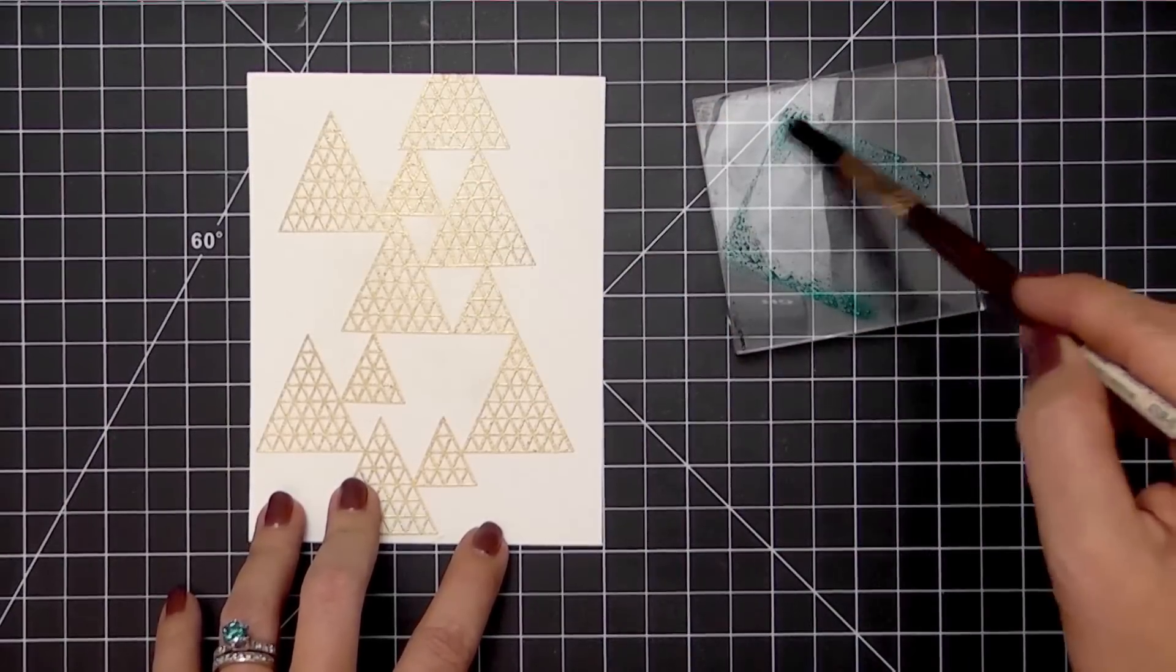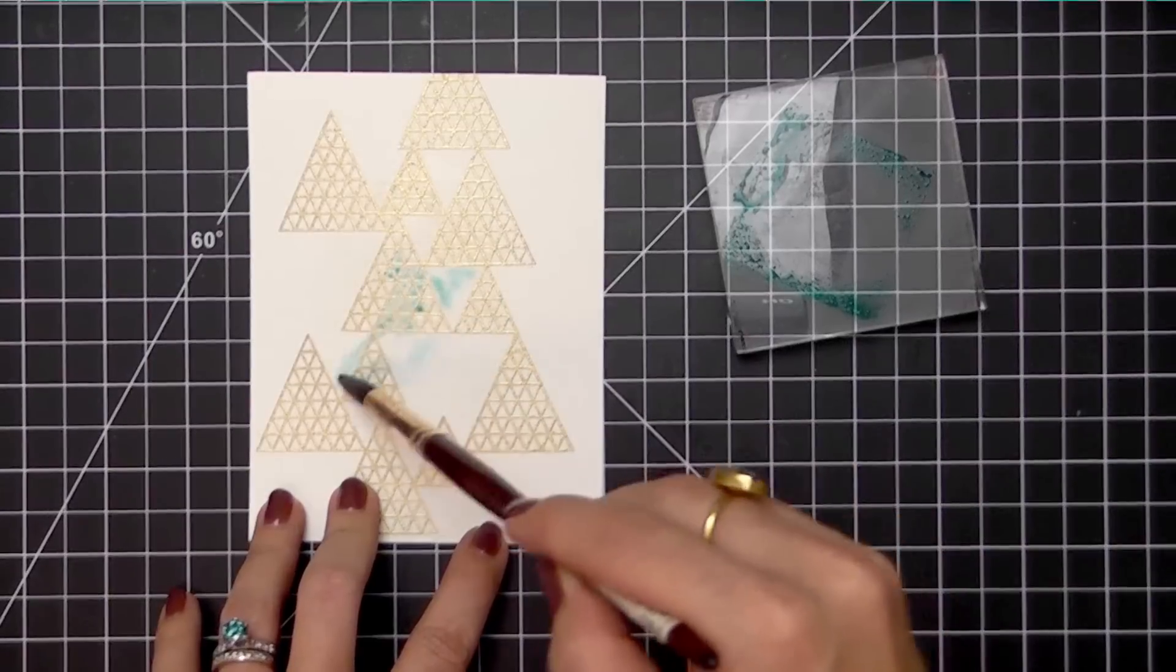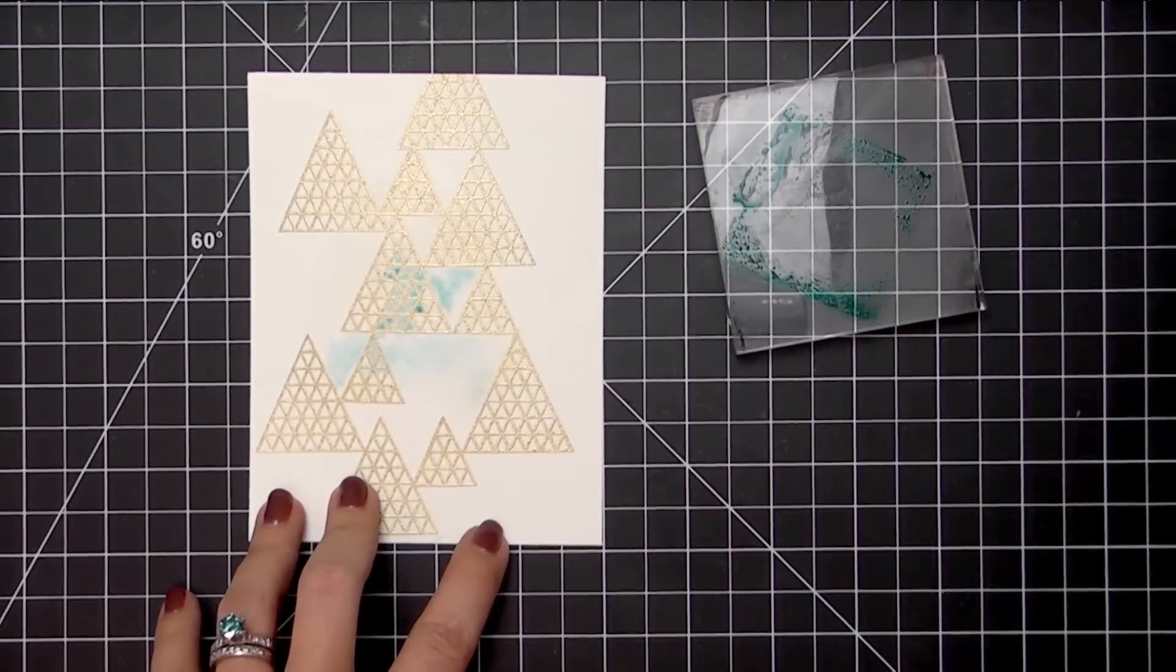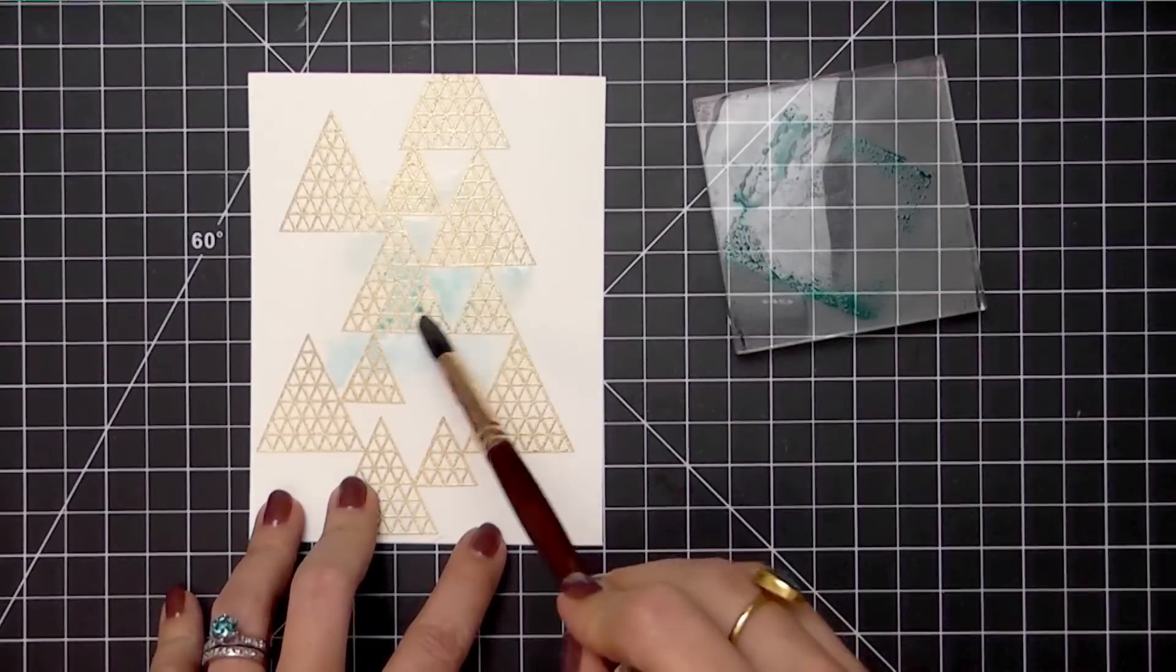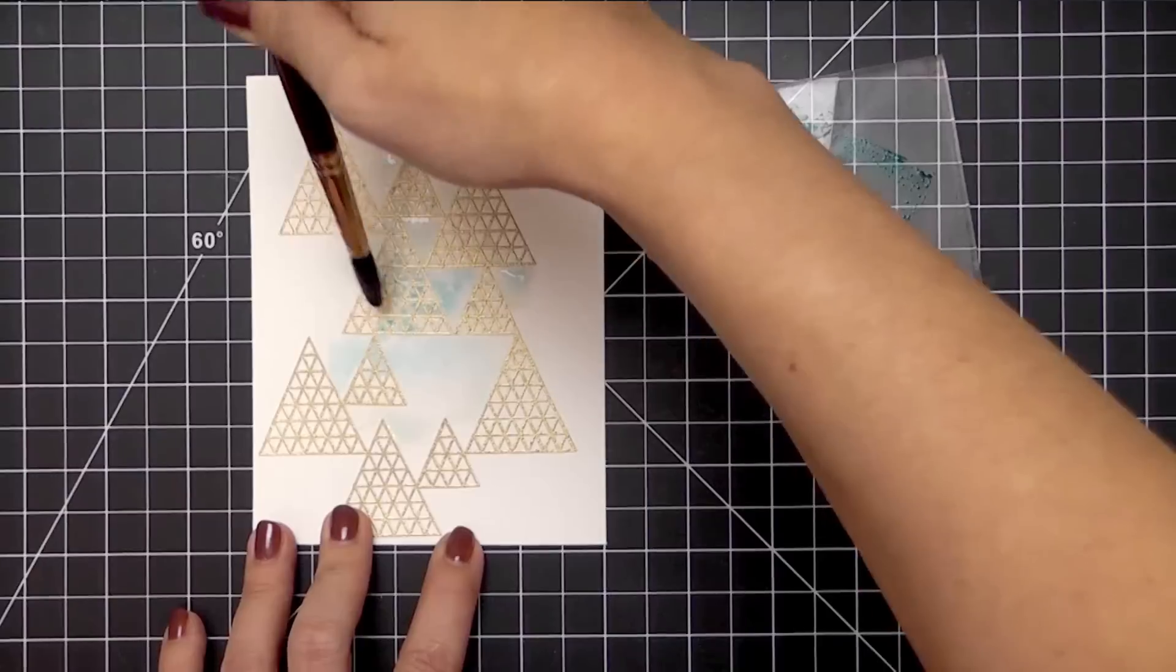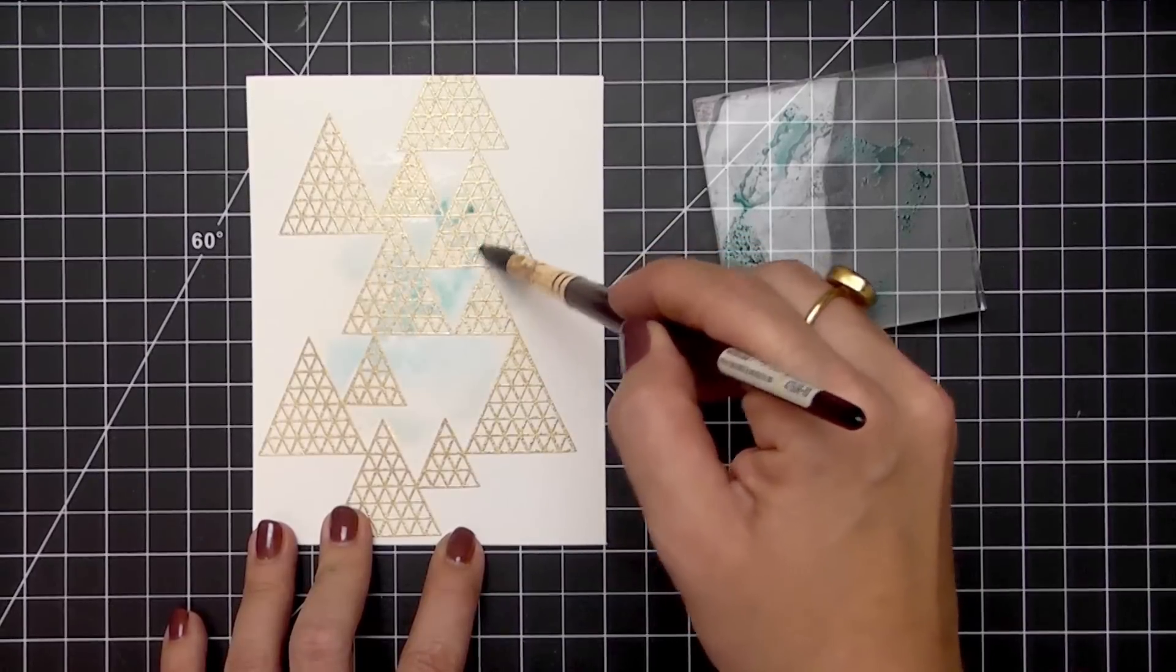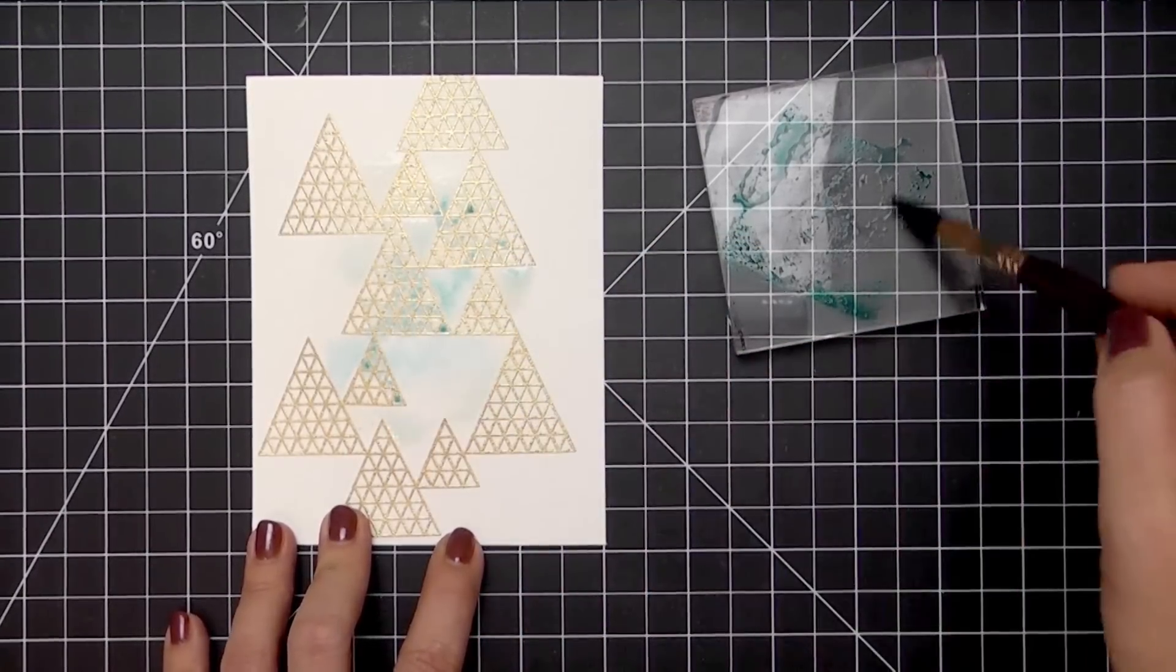I want it to be variegated. I want some heavier color in some areas and I want some lighter colors in others. So I put down water in the center of the paper and I've dropped in some ink. Now I've picked up more water with my brush and I'm spreading it out. I wanted to stay strong in the center of some of these triangles.